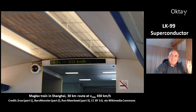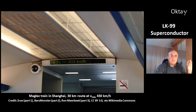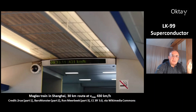This is a short clip of the Maglev train in Shanghai on its 30km route at a maximum speed of 430km per hour. You will see fast cars on a motorway and what happens when this train reaches its highest velocity.